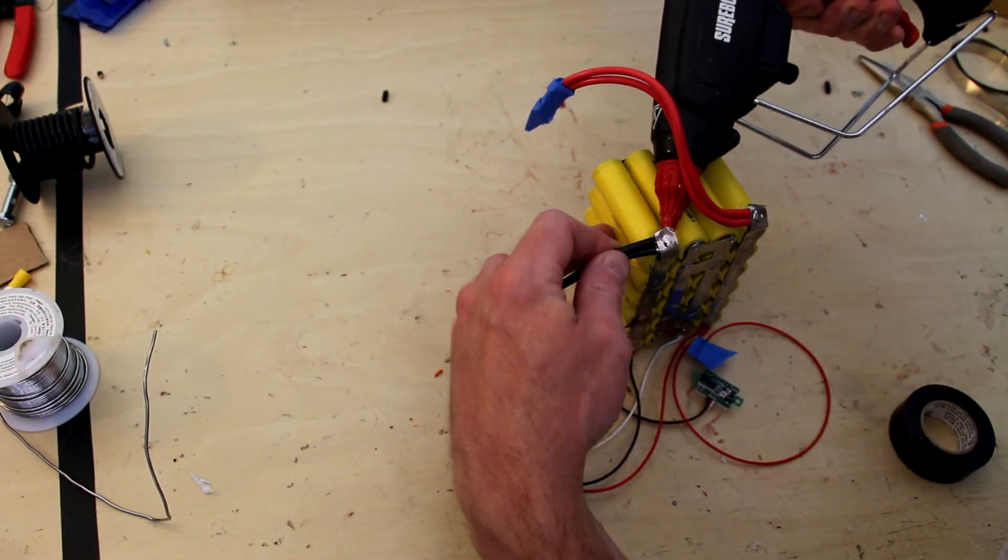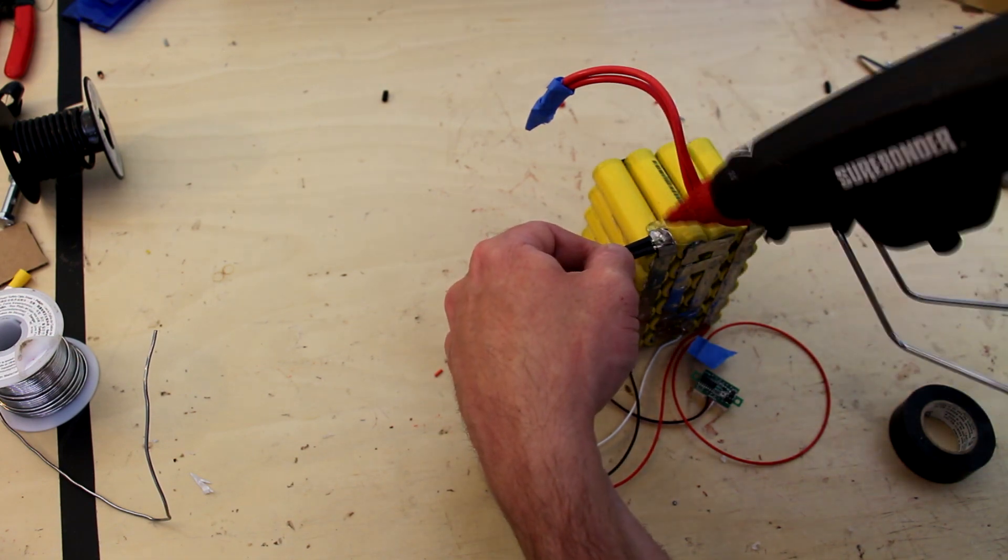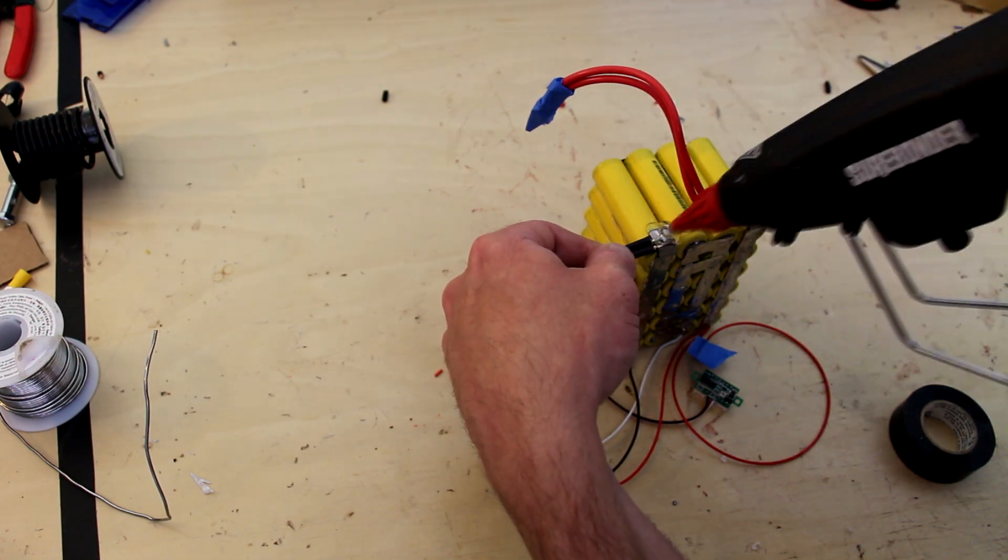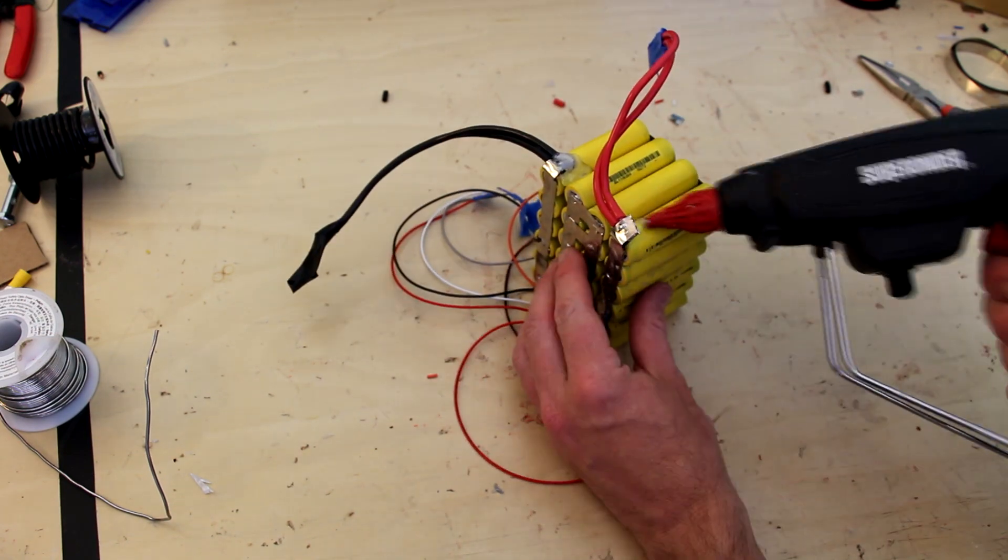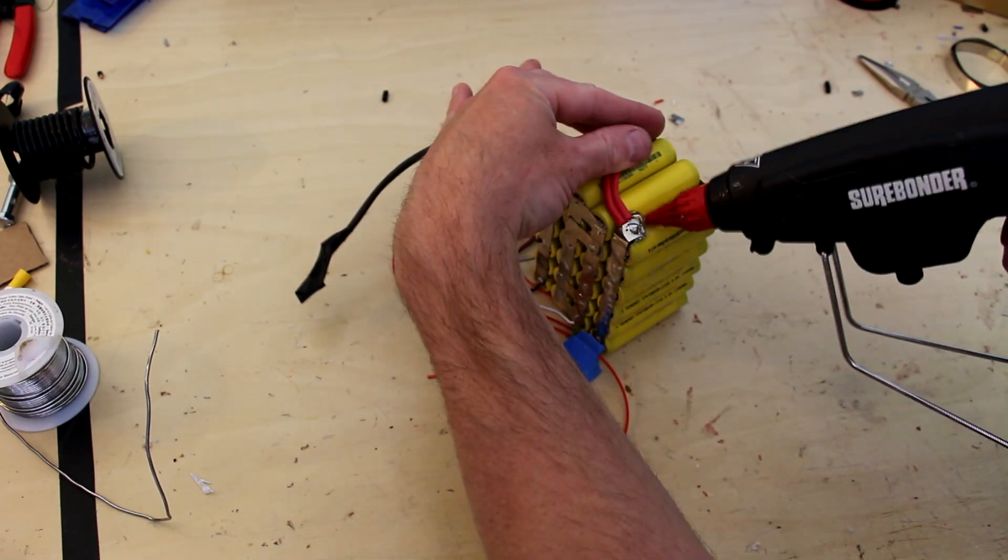For caution's sake I'm putting a little bit of hot glue around the positive and negative leads of the battery. This is mostly to prevent shorting should something get inside the battery and be able to touch the terminals, but also to keep the terminals in place so they don't fatigue over time.